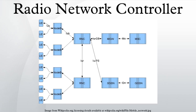The RNC connects to the circuit-switched core network through media gateway and to the SGSN in the packet-switched core network.